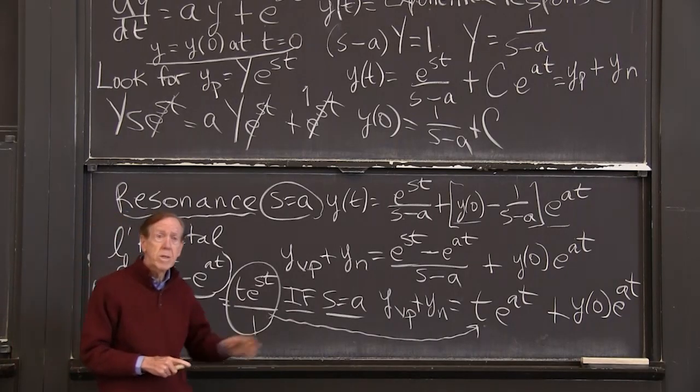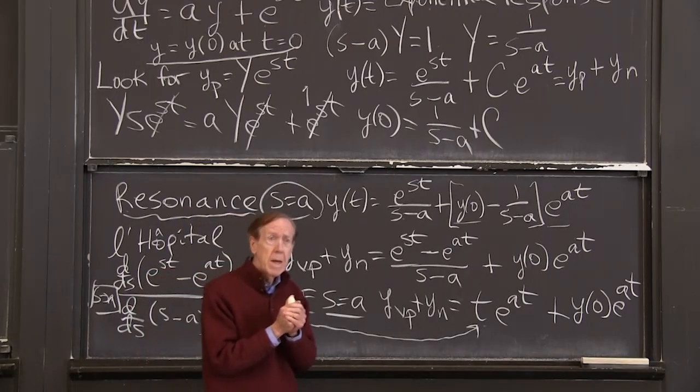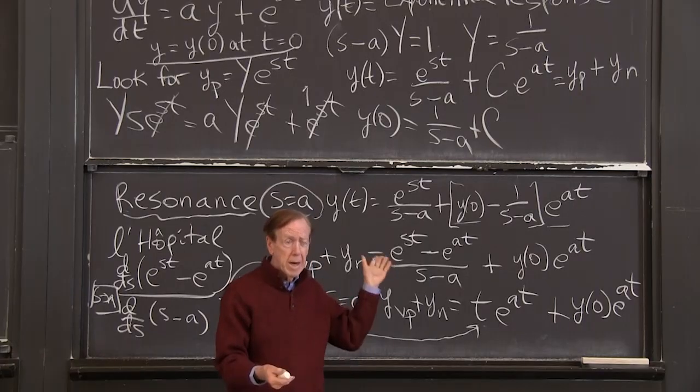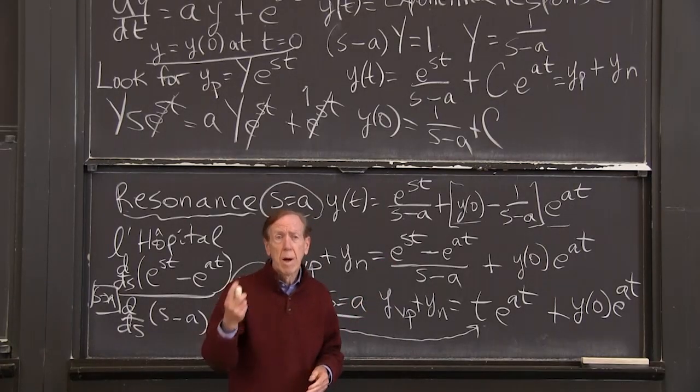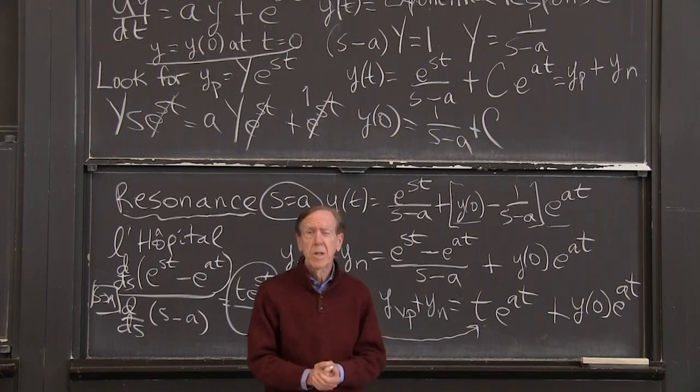So that's the solution for the best possible right-hand side, e^(st). Well, maybe the best is a constant. Second simplest is an exponential. Next will come sines and cosines. That's the next lecture. Thanks.